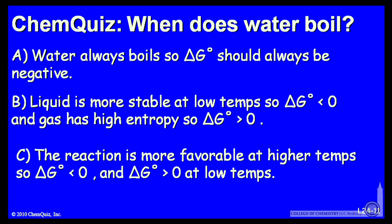Let's look at a possible explanation for each answer. A, water always boils, so delta G standard should always be negative. B, the liquid is more stable at low temperatures, so delta G should be less than zero, and the gas has a higher entropy, so delta G should be greater than zero. Or C, the reaction is more favorable at higher temperatures, so delta G should be less than zero, and delta G should be greater than zero at low temperatures. Think about those three possible explanations and make a selection.